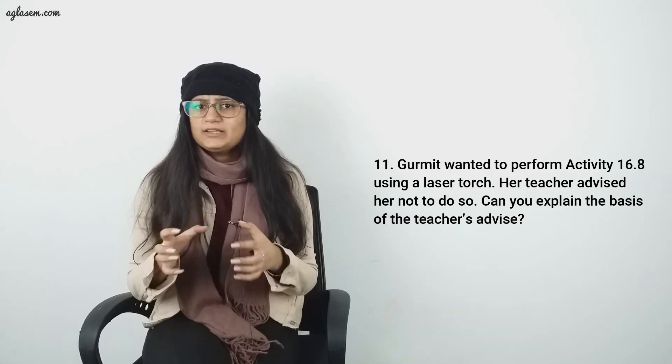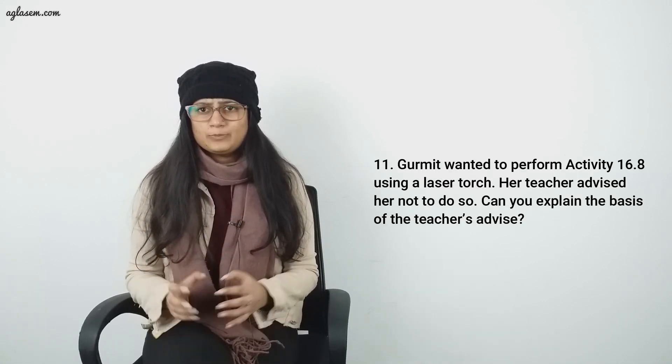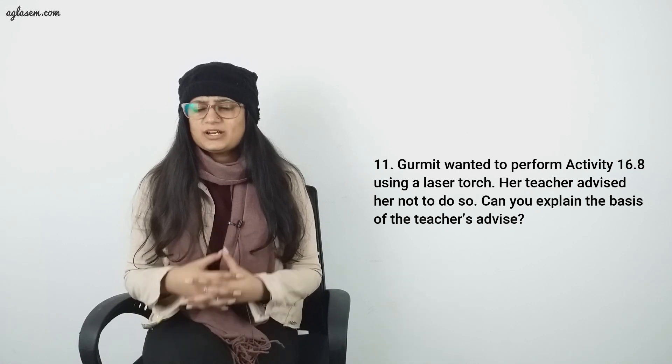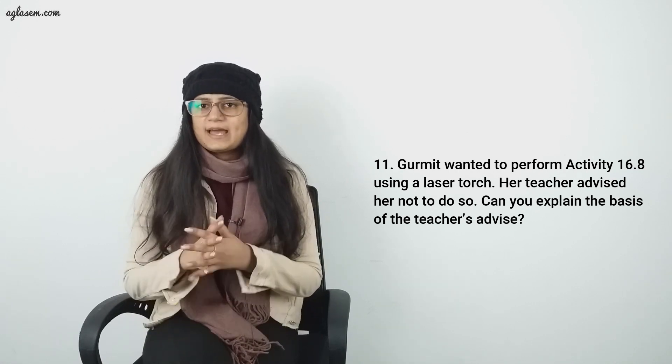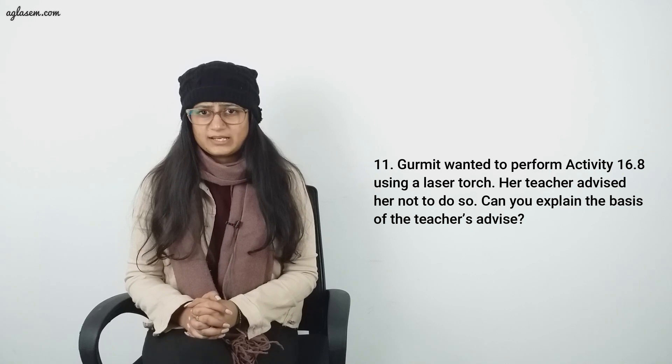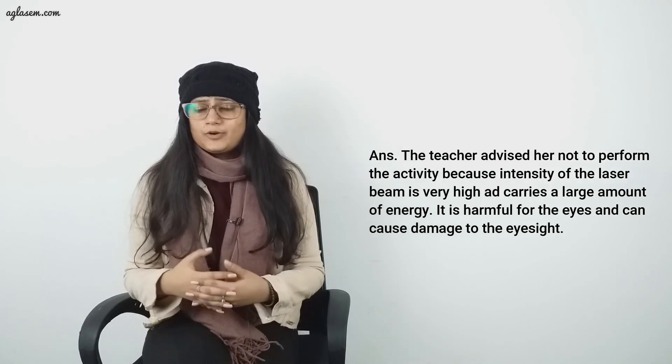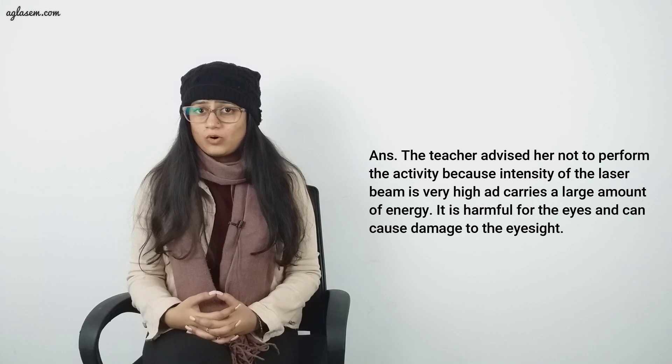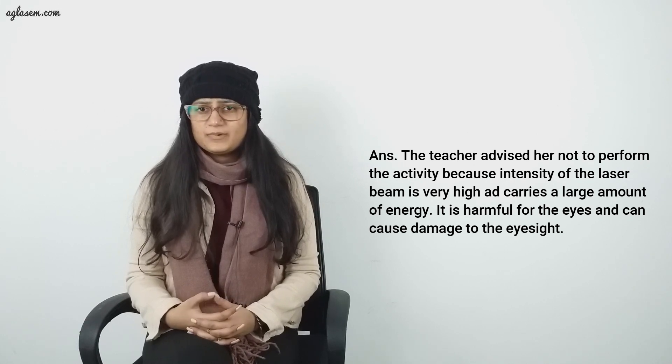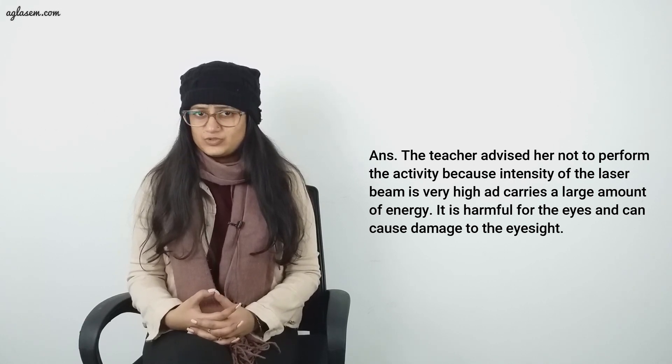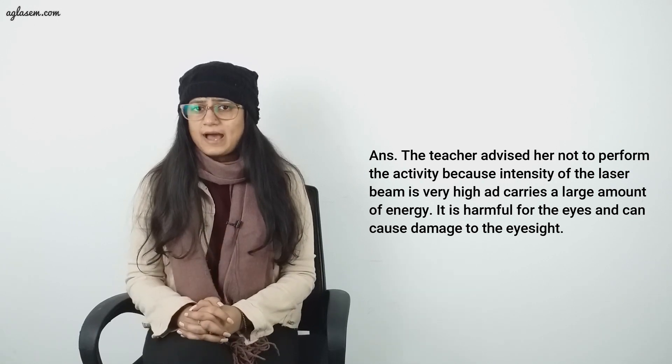Question number 10: Draw a labeled sketch of the human eye. Answer: Here students need to draw a sketch on their own and present in the class. Question number 11: Gurmeet wanted to perform activity 16.8 using a laser torch. Her teacher advised her not to do so. Can you explain the basis of the teacher's advice? Answer: The teacher advised her not to perform the activity because intensity of the laser beam is very high and carries a large amount of energy. It is harmful for the eyes and can cause damage to the eyesight.